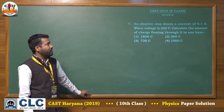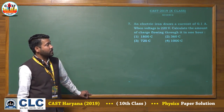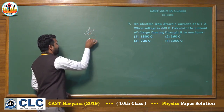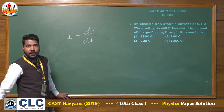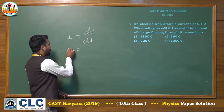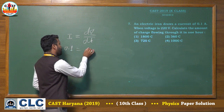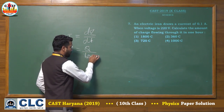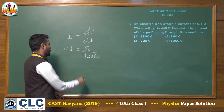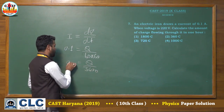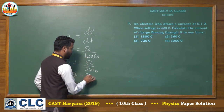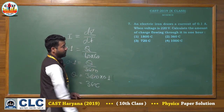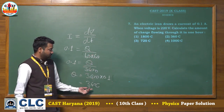Seventh question: an electric iron draws a current of 0.1 ampere when voltage is 220 volts. Calculate the amount of charge flowing through it in one hour. Charge = current × time. Current = 0.1 A, time = 1 hour = 3600 seconds. So Q = 0.1 × 3600 = 360 coulombs. The right answer of this question is the second option: 360 coulombs.